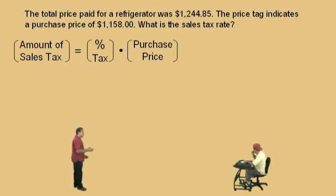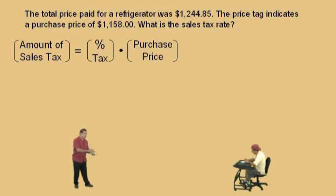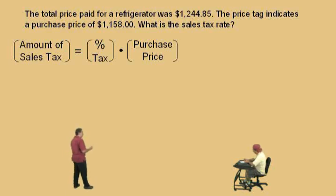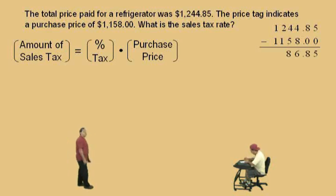So here's our equation: the amount of sales tax is equal to the percent tax times the purchase price. In this problem, we do not know the amount of sales tax. We were given the purchase price — the price on the price tag — and the amount that was paid at the cash register. Remember, at the cash register, Charlie, you pay the purchase price plus the amount of tax. So in order to calculate the amount of tax, we must take the difference of the total paid at the cash register and the purchase price. How much was paid at the cash register? $1,244. From that we subtract $1,158 and we get $86.85. That right there is the amount of tax.